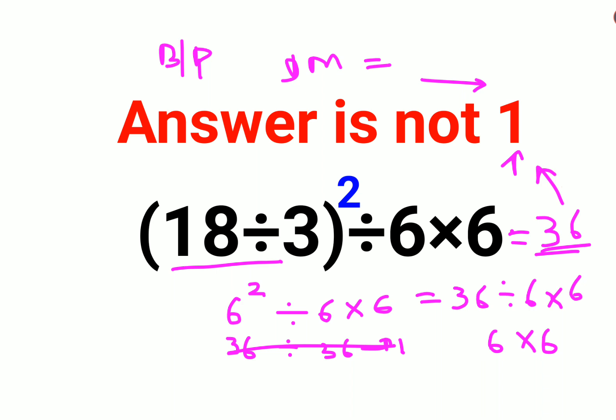So now you might be wondering, then when is it 1? It is 1 if we had the question in this form: 18 divided by 3, the whole squared, divided by, then this was another bracket. So this eventually comes out to be 6 squared, that is 36 divided by 6 into 6, which is again 36, because we need to do the brackets first.